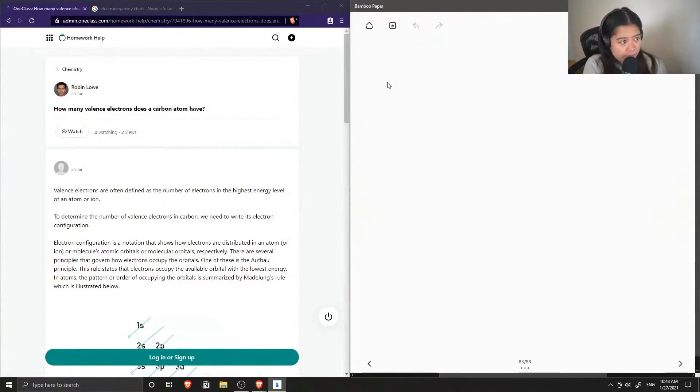Okay, question number seven. How many valence electrons does a carbon atom have?